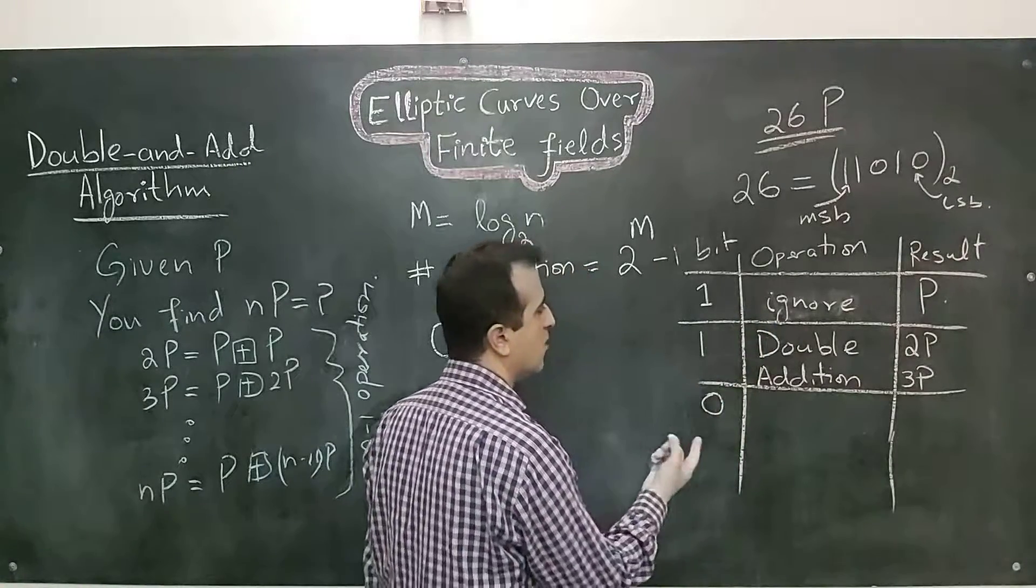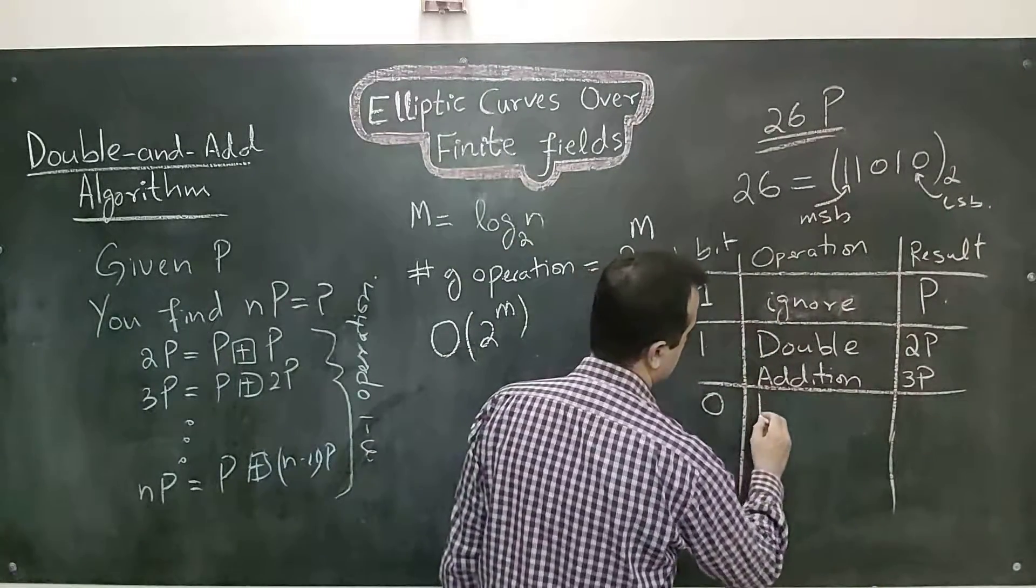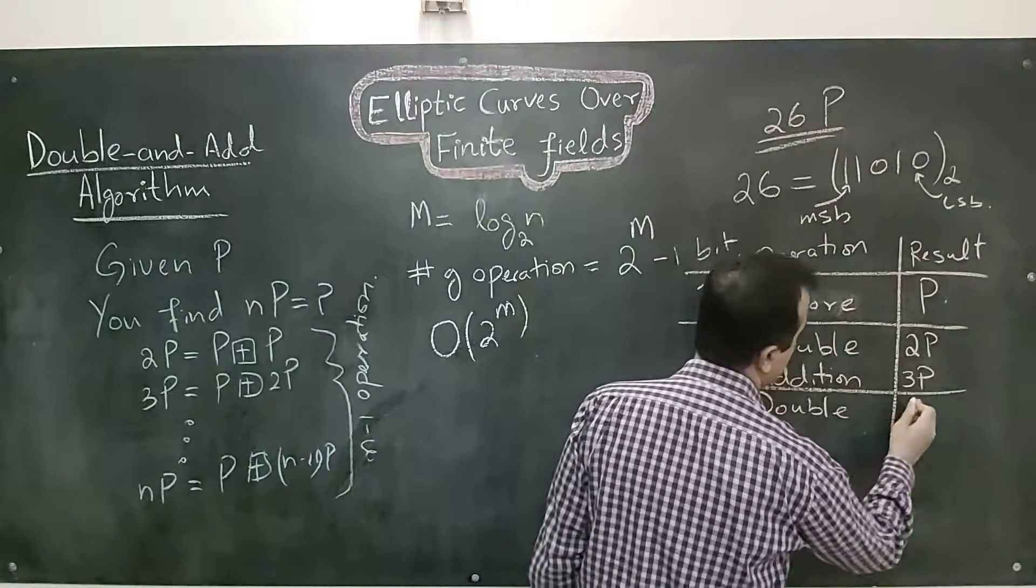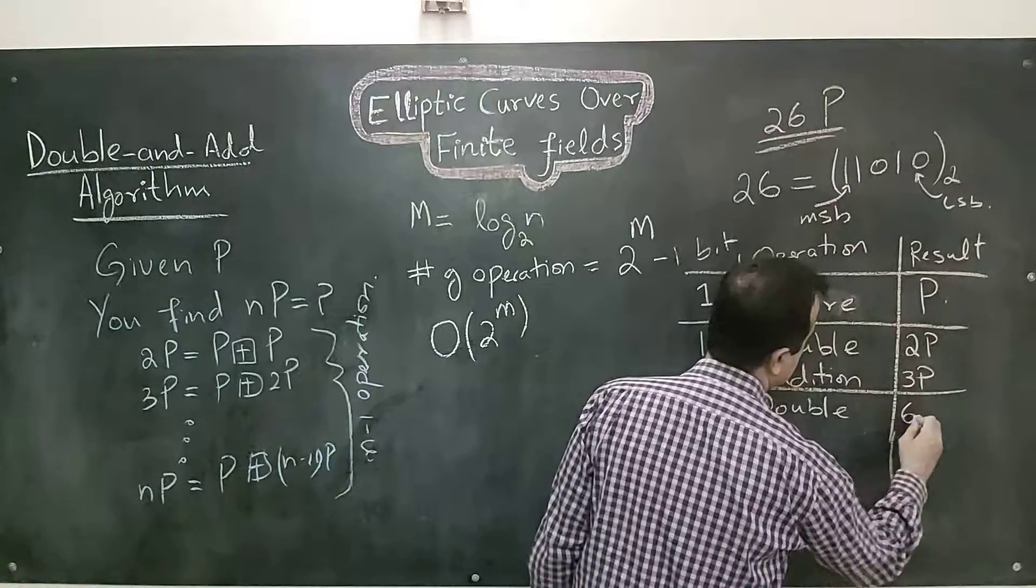The next bit is 0. In case of 0, I will only do the point doubling operation, and 3P is doubled to 6P.